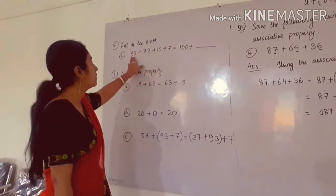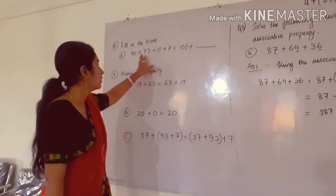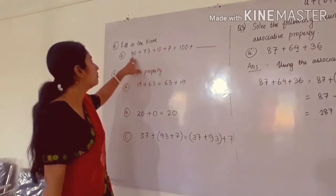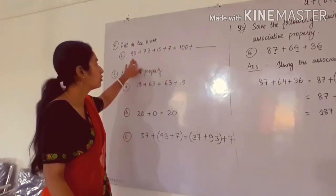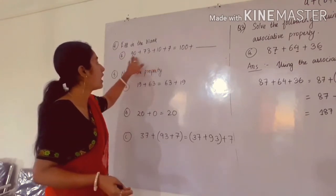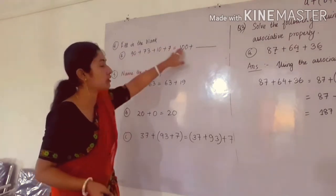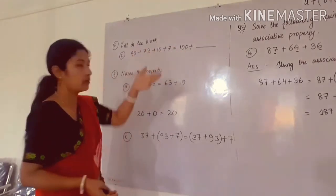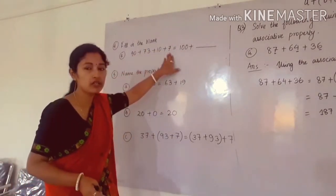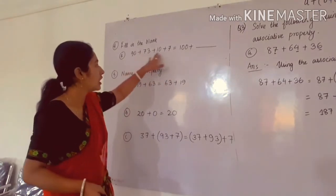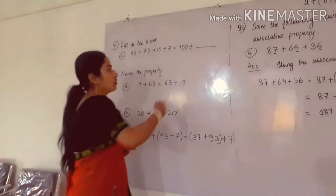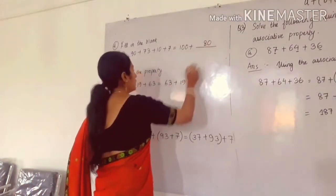Which numbers do we have to add? 90 and 10. If we add 90 and 10, we will get 100. That means this term need not be added again — it is already added to get 100. What terms are remaining? Only 73 and 7. When we add 73 and 7, we will get 80. So in the blank, it will be 80.